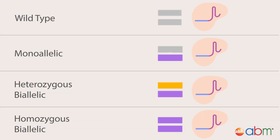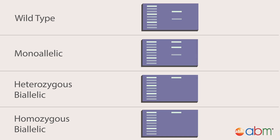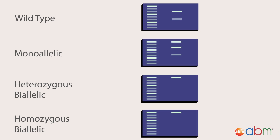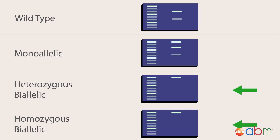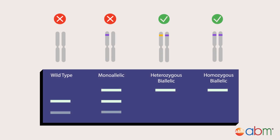The Cas9 RNP will only bind to unedited DNA, and thus will only cleave if no editing has occurred. Analyzing results on an agarose gel reveals the precise genotype. 1. A wild-type clone results in two bands — the RNP complex cleaves both alleles. 2. A monoallelic clone results in three bands — the RNP complex cleaves only the unedited allele. 3. A biallelic clone results in one band, as the RNP complex does not cleave. This assay confidently screens for wild-type, monoallelic, and biallelic edited clones with a simple readout and high accuracy.